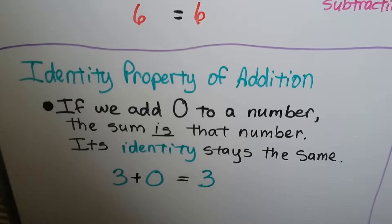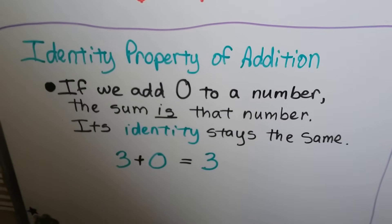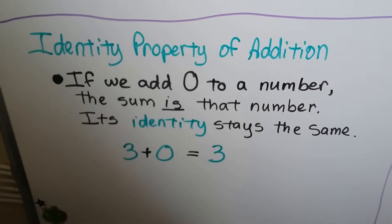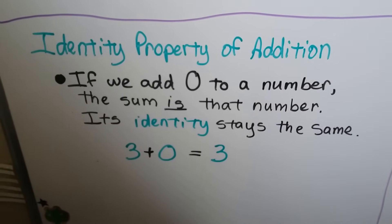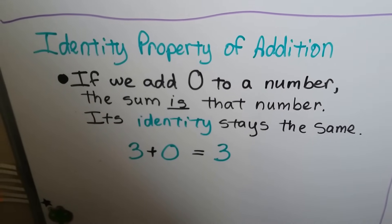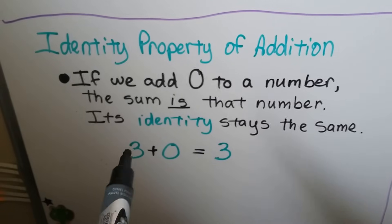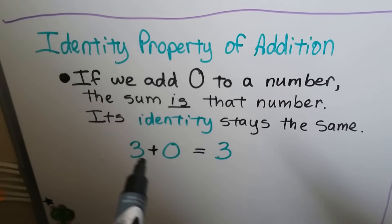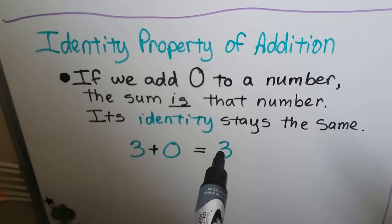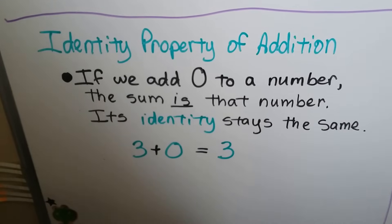The identity property of addition tells us if we add 0 to a number, that sum is that number — its identity stays the same. It doesn't matter what number we're adding to 0; it keeps its identity. That number stays the same.